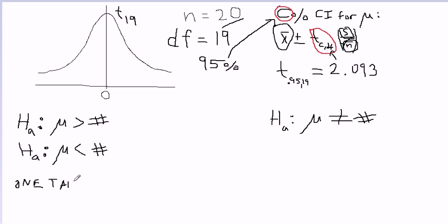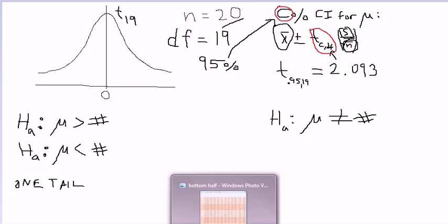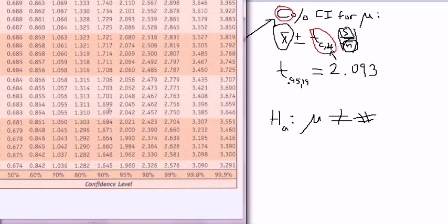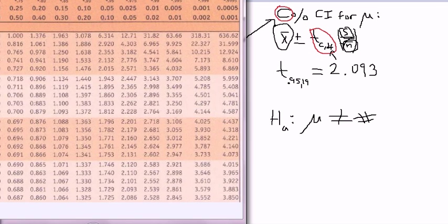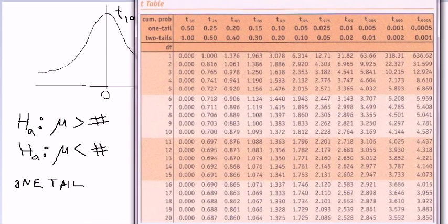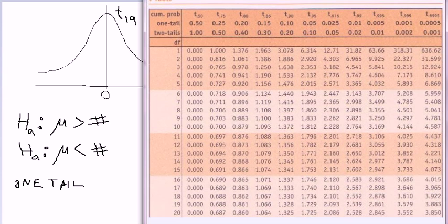So let's pull up the top of the table because that's where you would need to first look when you're getting a t-value, a t-cutoff value for a hypothesis test with one of these two alternatives. So let's pull up the table.